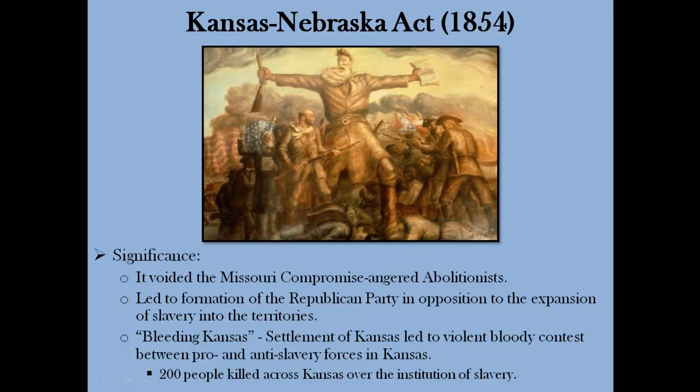It's important to understand that the Republican Party did not want to abolish slavery — it wanted to stop the spread of slavery into the territories. We'll talk more about the Republican Party when we get to the presidential election of 1860. And finally, there was violence between pro-slavery and anti-slavery forces in Kansas, as both sides sent waves of people into the territory to influence the vote on slavery.